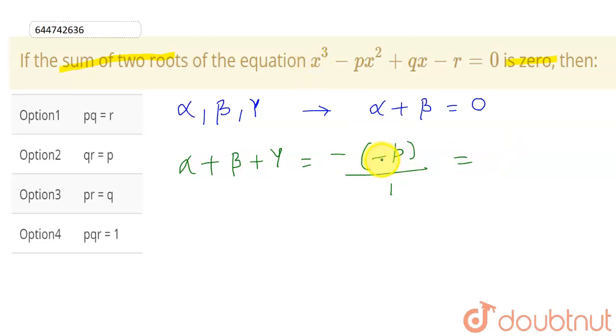So this will be equal to minus minus which gives plus. So the sum of the roots will be equal to p. But we have given that alpha plus beta is equal to zero. So this gives zero plus gamma equals p. Therefore my gamma is equal to p.